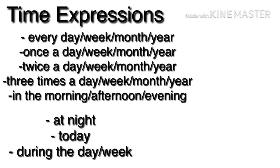Here is a list of time expressions used in the present tense: every day, every week, every month, every year; once a day, once a week, once a month, once a year; twice a day, twice a week, twice a month, twice a year; three times a day, three times a week, three times a month, three times a year; in the morning, in the afternoon, in the evening, at night; today, during the day, during the week.